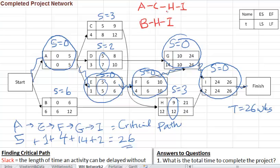So what are the lengths of these two paths? A is 5, C is 4, H is 12, and I is 2. That's 9 plus 12 is 21, plus 2 is 23. And B, H, I, that's 6, 12, 2. So 6 plus 12 plus 2 is 20. So you can kind of see just by way of examples, the lengths of these paths are shorter than the length of our critical path.